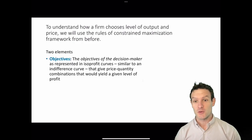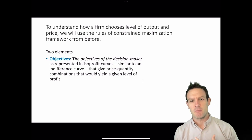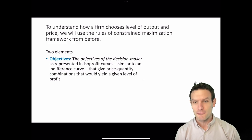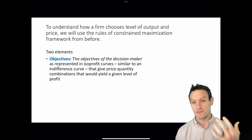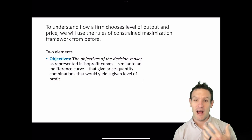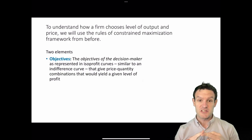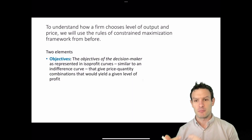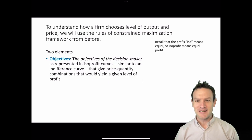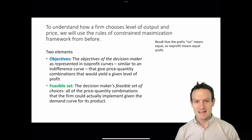There are two elements, and the first one is the objectives of the owners of the firm. The objectives of the decision maker are represented by isoprofit curves. These are similar to indifference curves like we saw previously in different chapters in the book. For an isoprofit curve, we're thinking about combinations of quantity and price that result in the same level of profit. Remember that 'iso' means equal or fixed, so isoprofit means equal profit.